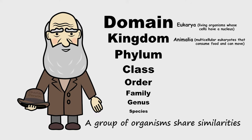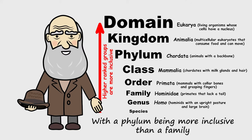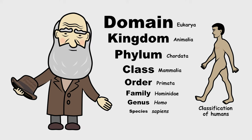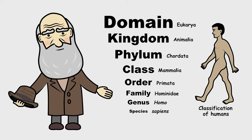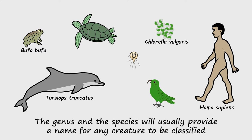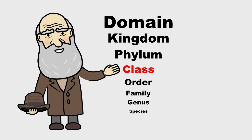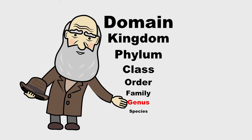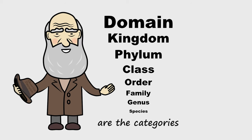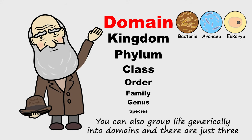A group of organisms share similarities, with the phylum being more inclusive than a family. The genus and the species will usually provide a name for any creature to be classified. Domain, kingdom, phylum, class, order, family, genus, species are the categories. You can also group life generically into domains, and there are just three.